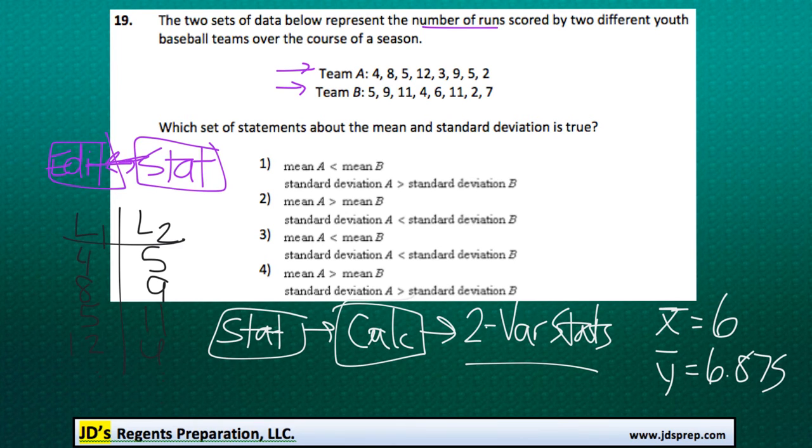So comparing these two we'll see that the mean of team B is greater than mean A, or mean A is less than mean B. So it looks like it's not number 2 and it's not number 4 because the mean A needs to be less than the mean of B.